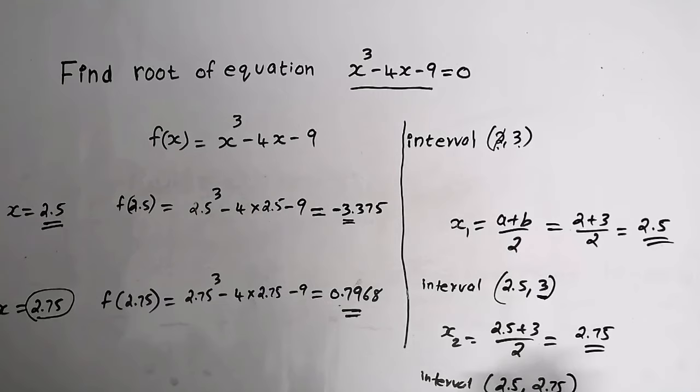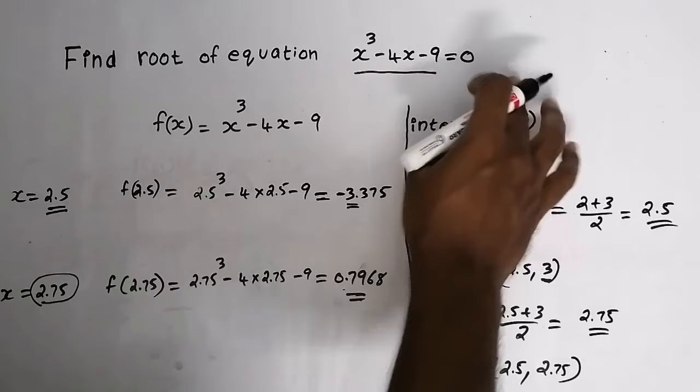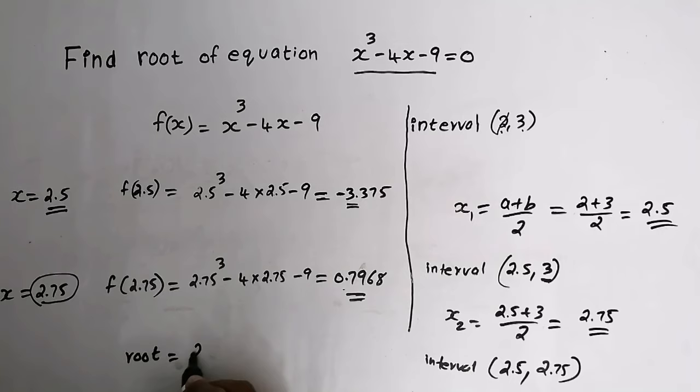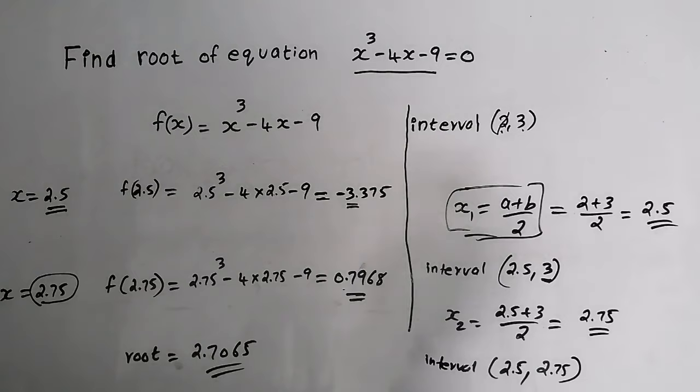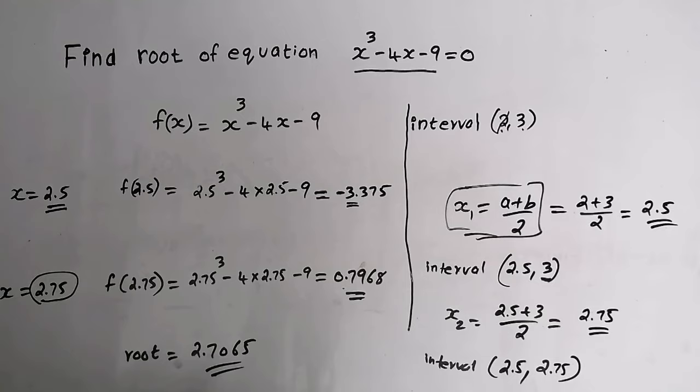Do the remaining iterations and you will get the root between 2.5 and 2.75. Do the number of iterations mentioned in the question, and the final root will be equal to 2.7065. The answer lies between 2 and 3, and here it is 2.7065. That is the bisection method.